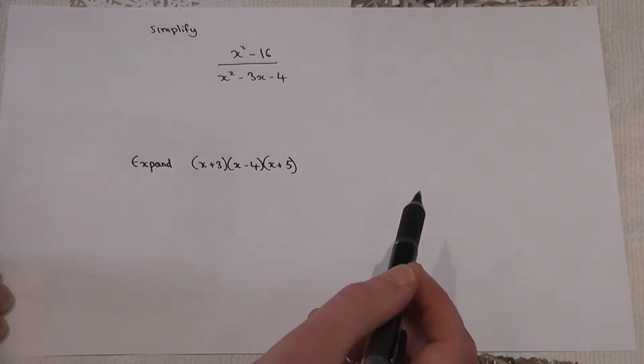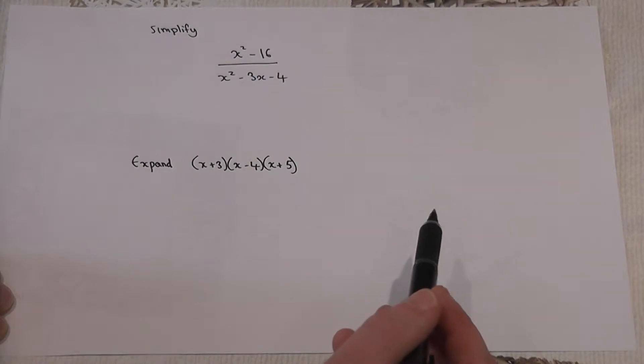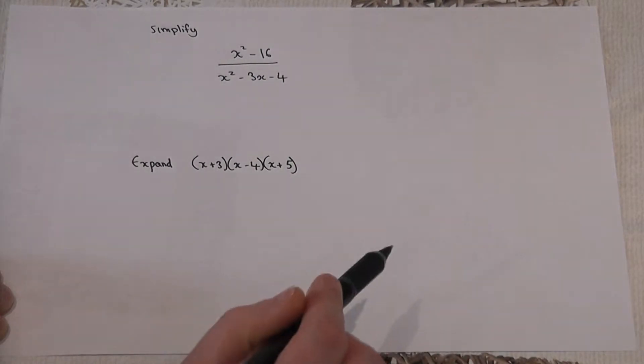Now if you're asked to simplify a fraction involving quadratics, then the question wants you to factorize the top and the bottom of the fraction separately, and then you'll see what happens.